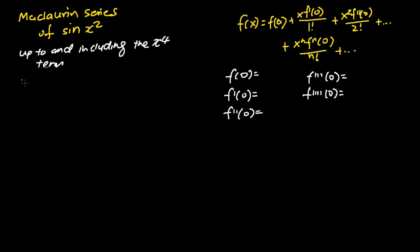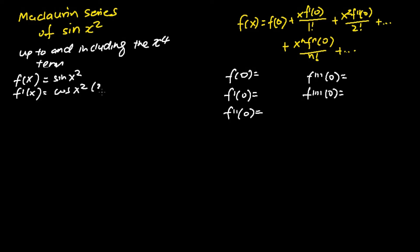We start off by defining f(x) as sine x squared. We then find f'(x), which is cosine x squared, and differentiating x squared we get 2x. So f'(x) is basically 2x cosine x squared.